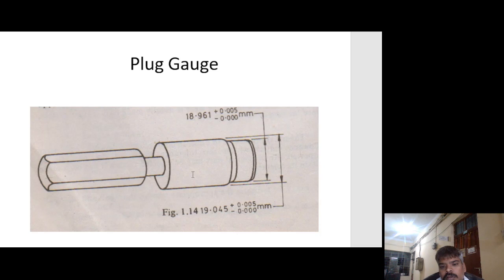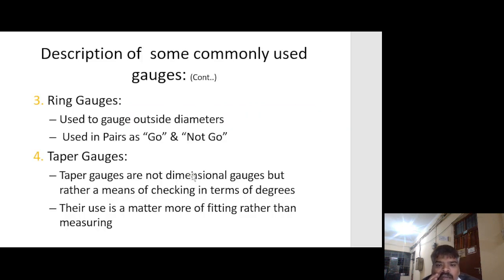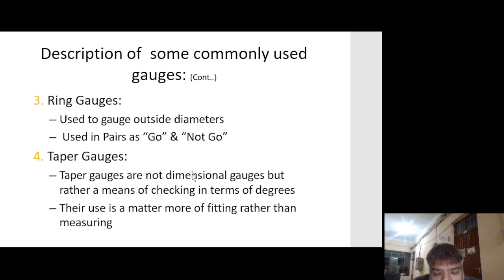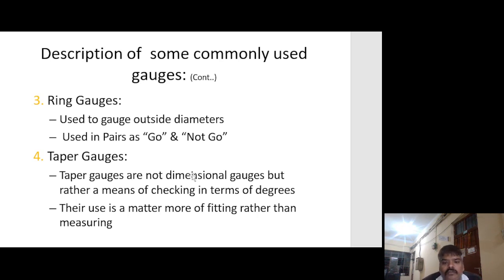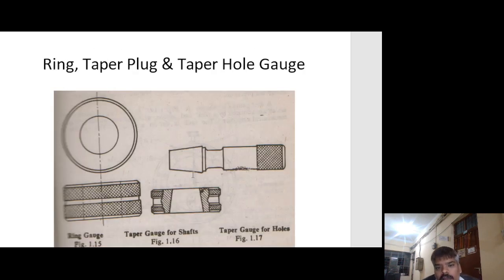Ring gauge is used to gauge outside diameter and is used in pairs as Go and Not Go. It is used for checking the outside diameter. Taper gauges are not dimensional but rather a means of checking in terms of degree — their use is more a matter of fitting rather than measuring. Types include ring taper, plug taper, and hole gauge taper.